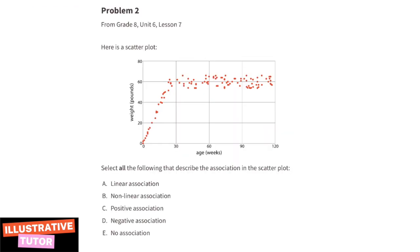Problem number two, from eighth grade unit six lesson seven: here is a scatter plot — select all of the following that describe the association. Part a: linear association. These points scattered on this plot do not form a straight line, so this one is a no. Part b: non-linear association. Since the points do not form a straight line, we can select this one.